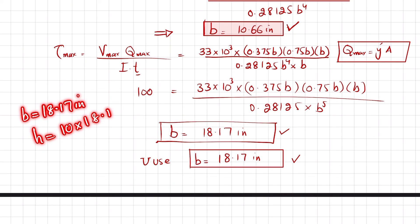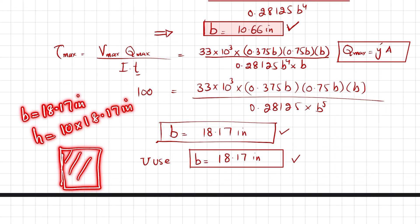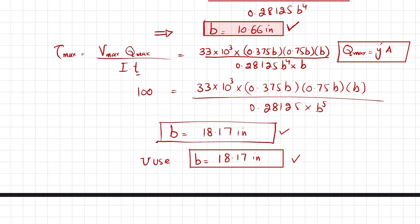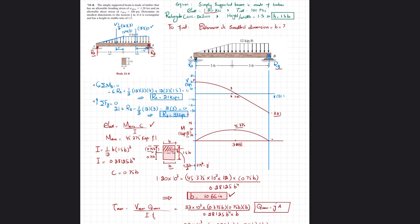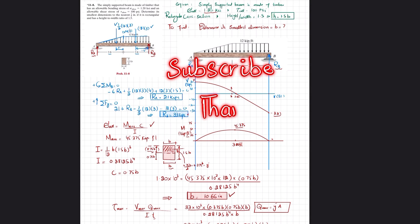So the required cross-section for the timber beam under the simply supported loading is b = 18.17 inches and height = 1.5 × 18.17 inches. I hope you enjoyed this video — if you like it, please subscribe and keep watching the remaining videos. Thank you.